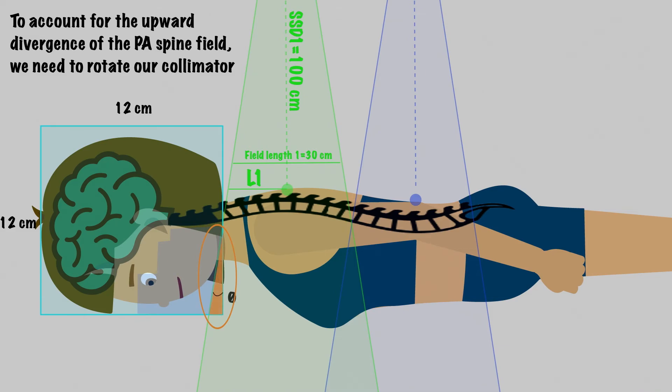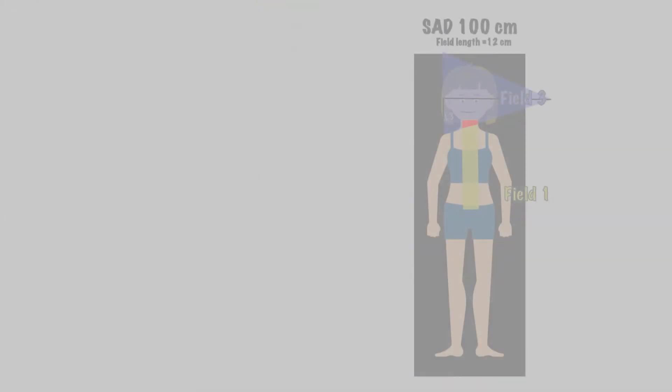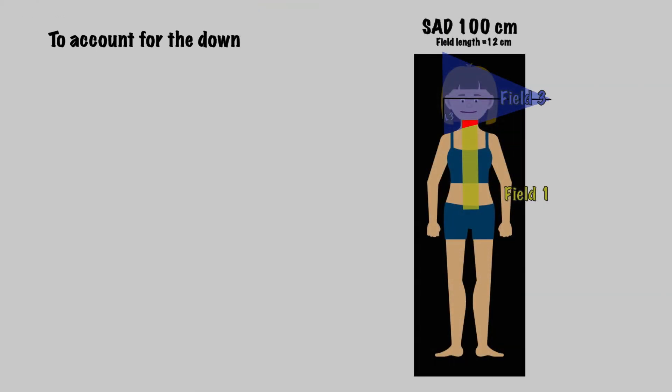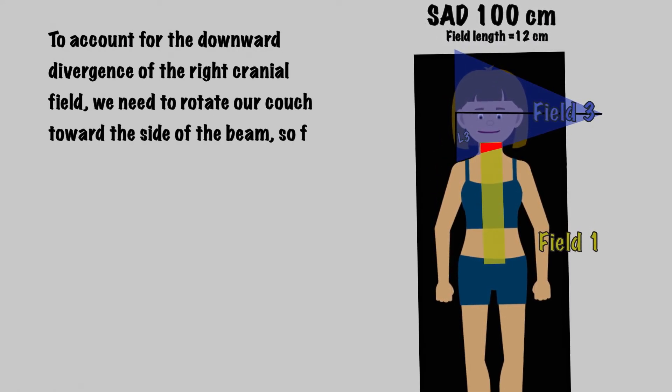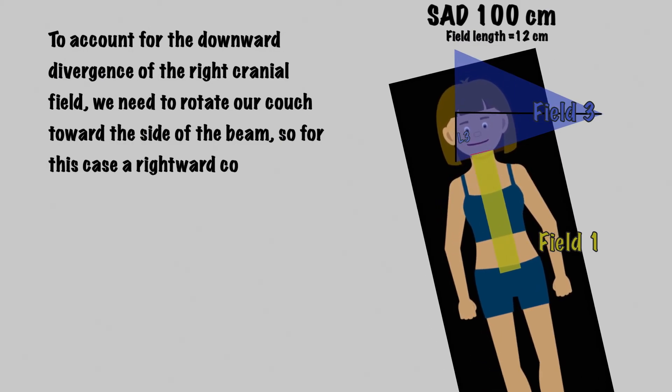We will use the same principles we talked about earlier. Let's draw our triangle and notice the angle we are solving for. We need to take the inverse tangent of L1 from our superior spinal field of 15 cm, divided by SSD1 of 100 cm, which is 8.5 degrees. To account for the downward divergence of the right cranial field, we need to rotate our couch toward the side of the beam. So for this case, a rightward couch kick.